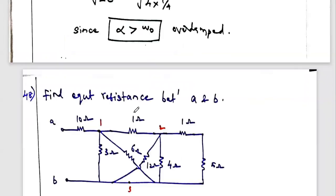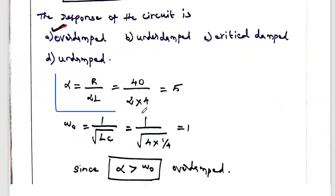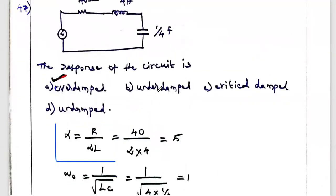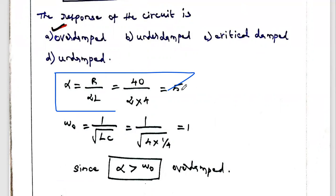Omega-naught = 1 divided by square root of L times C. Here L = 4 H and C = 1/4 F, so omega-naught = 1. Now checking: alpha = 5 and omega-naught = 1, so alpha is greater than omega-naught. The circuit satisfies the first condition — it is an overdamped circuit. So option A is correct.